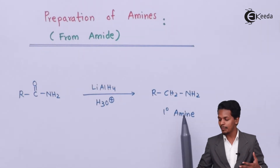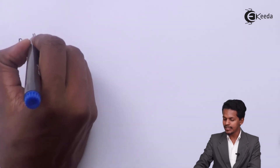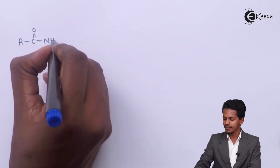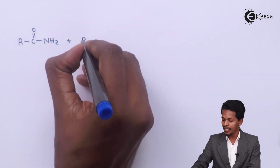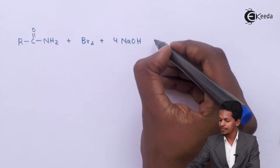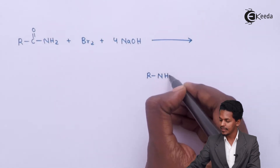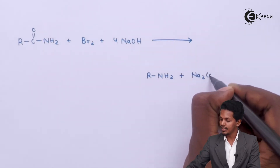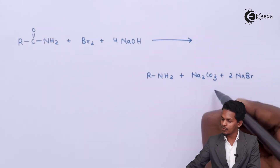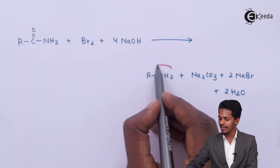So we can prepare a primary amine this way, but there is also an alternative method to convert an amide into an amine. For that alternative method, suppose we take the amide RC(=O)NH2 and react it with bromine in the presence of 4 moles of NaOH — which can be aqueous or alcoholic. The product we get is RNH2 plus Na2CO3, along with 2 moles of NaBr and 2 moles of H2O as byproducts.